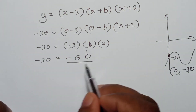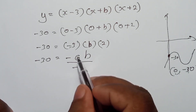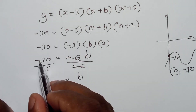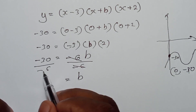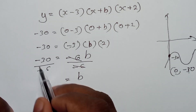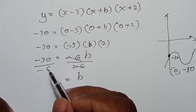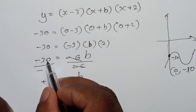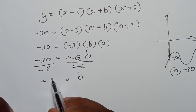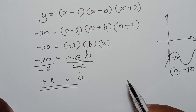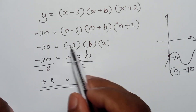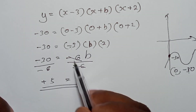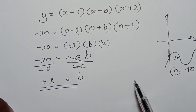To get b, divide both sides by minus 6. Minus 6 divided by minus 6 cancels, leaving b. On the other side, minus divided by minus gives plus — same signs give a positive result. So 30 divided by 6 is 5, meaning b equals plus 5. Remember: minus times plus or plus times minus always gives minus. That's how you simplify this question very easily.